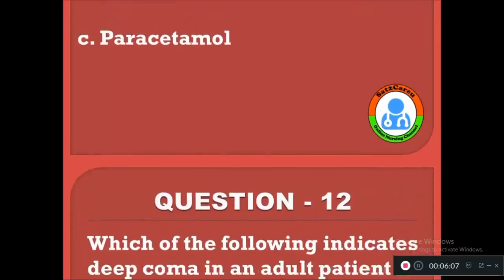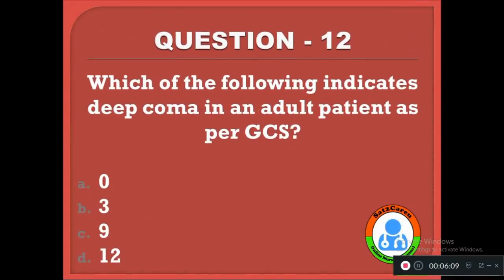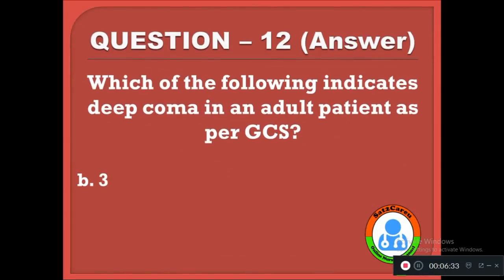Question 12: Which of the following indicates deep coma in an adult patient as per the Glasgow Coma Scale? Option A: 0, B: 3, C: 9, D: 12. The correct answer is B. Deep coma in an adult patient as per the Glasgow Coma Scale will have a score of 3.